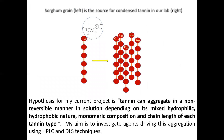This picture right here shows how we think aggregation happens in solution. The red dots represent single monomer units, and this represents a long chain that aggregates to make particles. The hypothesis of my current project is that tannin can aggregate in a non-reversible manner in solution, depending on its mixed hydrophilic-hydrophobic nature, monomeric composition, and chain length of each tannin type.